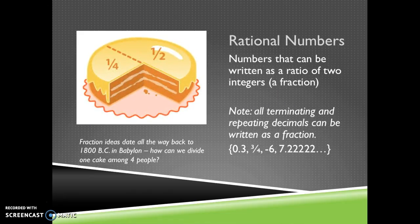The next type of number is a rational number. Rational numbers were actually invented before zero and before negative numbers. But rational numbers also include some fractions and decimals. Any number that can be written as a ratio of two integers, as a fraction, is called a rational number. That originated all the way back in 1800 BC in Babylon. How can we divide one cake among four people? We each only get a part of something. We need this idea of fractions, not just counting numbers.